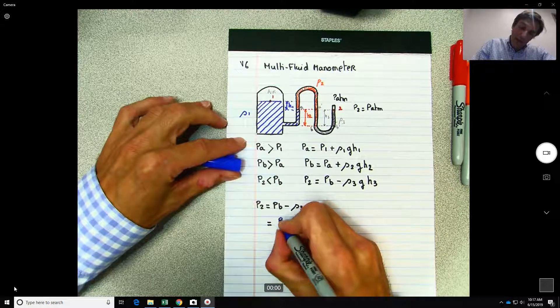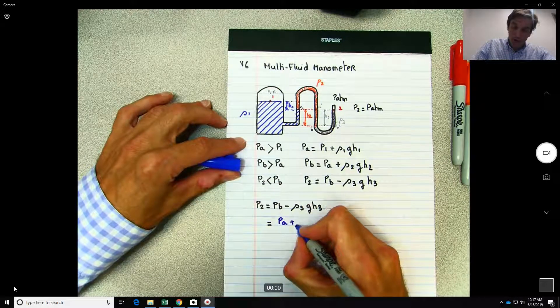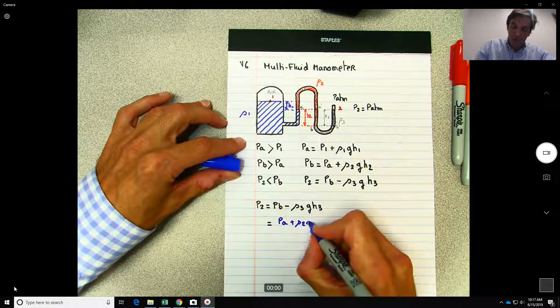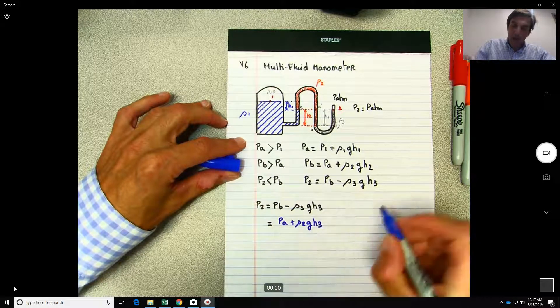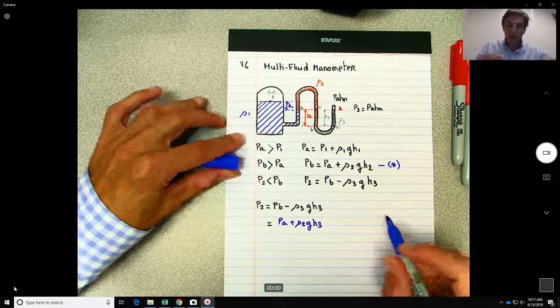PB was given over here, so this would be equal to what? PA plus rho 2 G h2, minus rho 3 G h3.